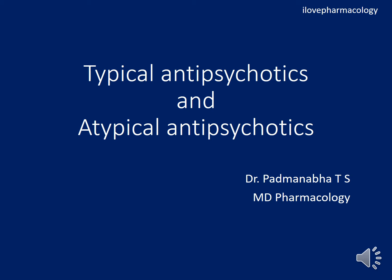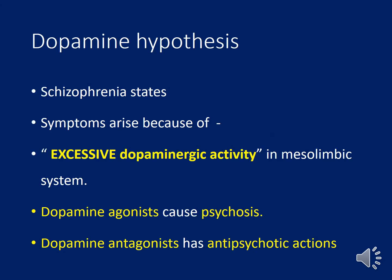Welcome. Today in this class you're going to learn about the differences between typical antipsychotics and atypical antipsychotics. Before going to the drugs in detail, we'll briefly cover schizophrenia, which is a severe psychiatric illness thought to be due to dopaminergic overactivity, mainly in the limbic system. Other neurotransmitters like serotonin and noradrenaline also probably play a role in this disorder.